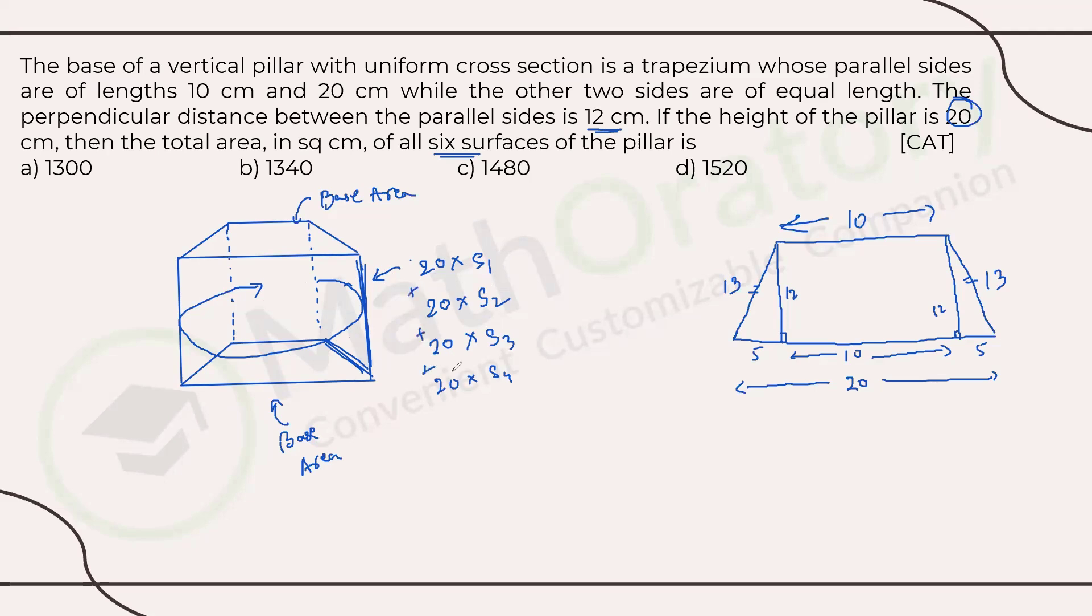Similarly, the front surface will be 20 into side two, the left surface will be 20 into side three, the back surface will be 20 into side four. Each of the surfaces are basically rectangles. If I add all of this, we are getting 20 times side one plus side two plus side three plus side four, which is basically the perimeter of the base. So whenever you have a prism, the base area has to be a right prism. So if you have the same base area repeated, that would be twice of base area plus height into perimeter of the base.